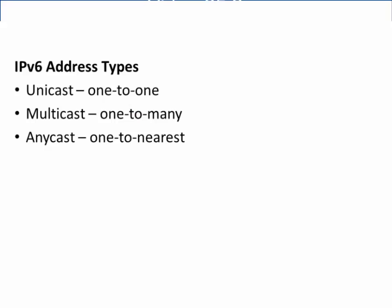In IPv6, we have unicast addresses, or one-to-one addresses, multicast addresses, or one-to-many addresses, and anycast, or one-to-nearest addresses.